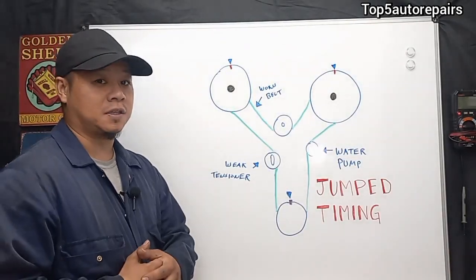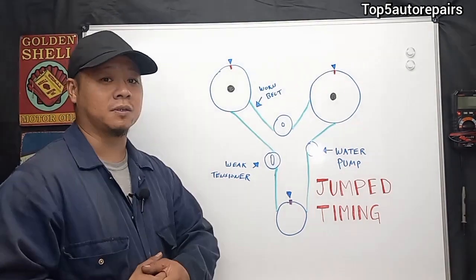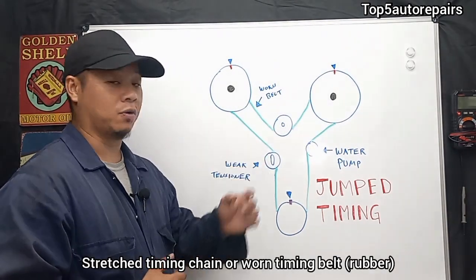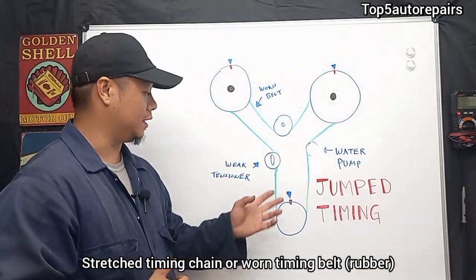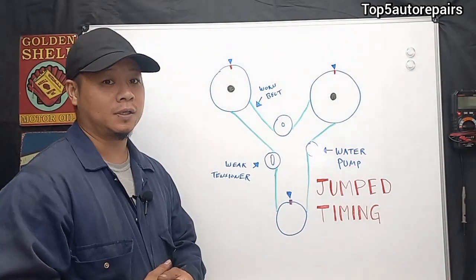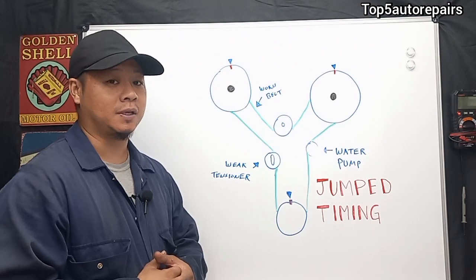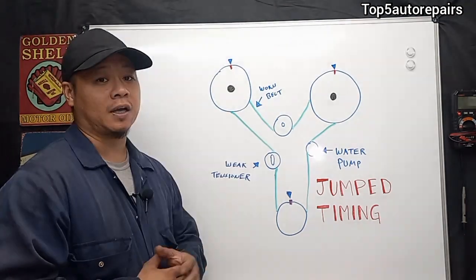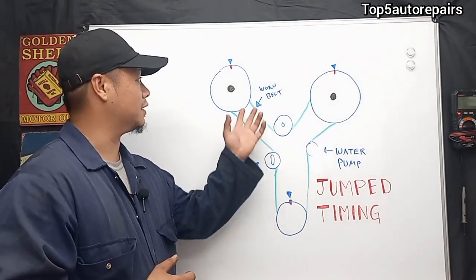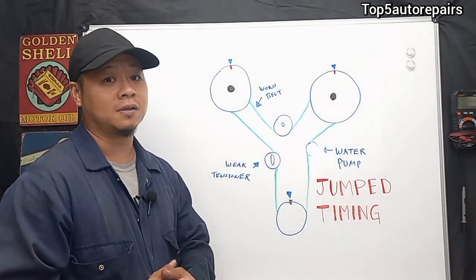The second common cause is either going to be a stretched timing chain or a worn timing belt. Basically, if it's stretched or completely worn, it cannot really retain that shape that it's supposed to be. And eventually it's going to be loose and create a lot of slack, and eventually it's going to jump, especially under load.